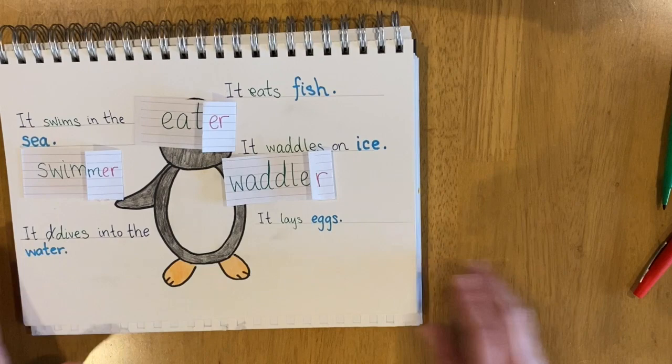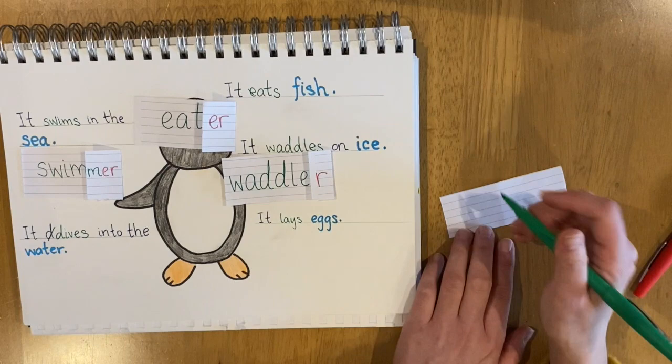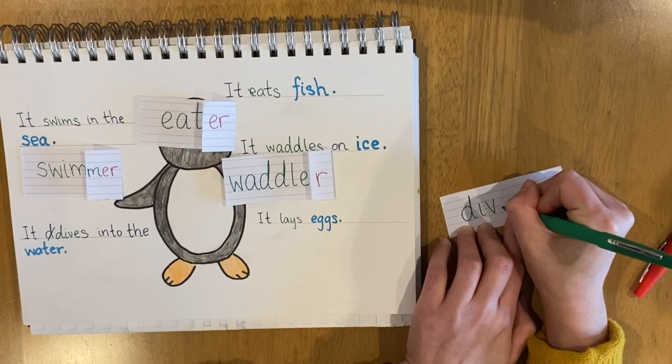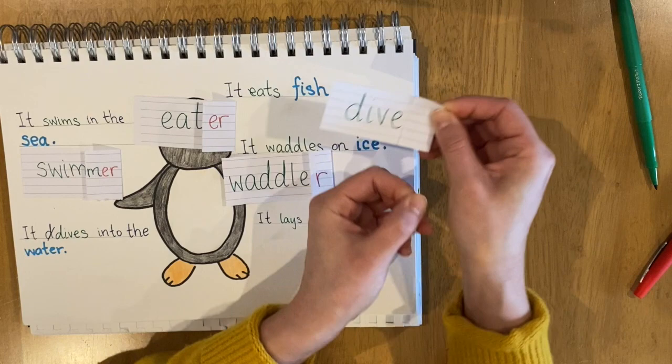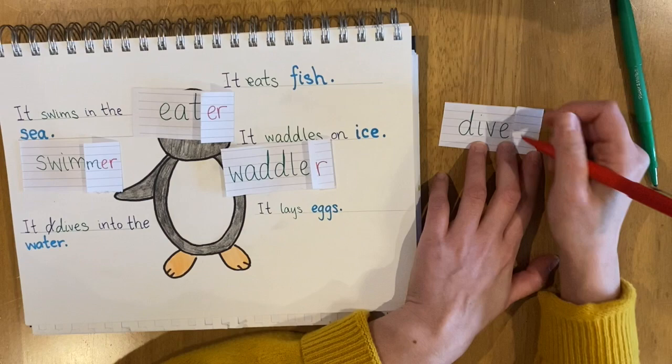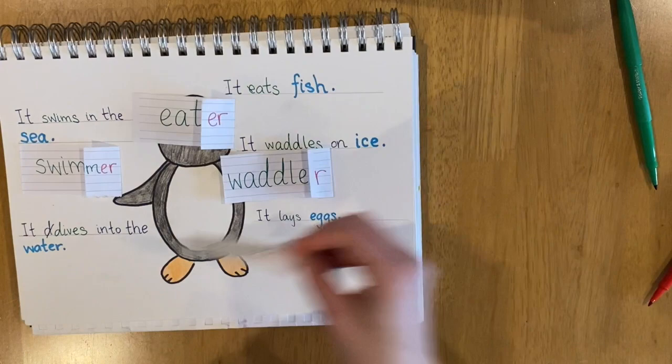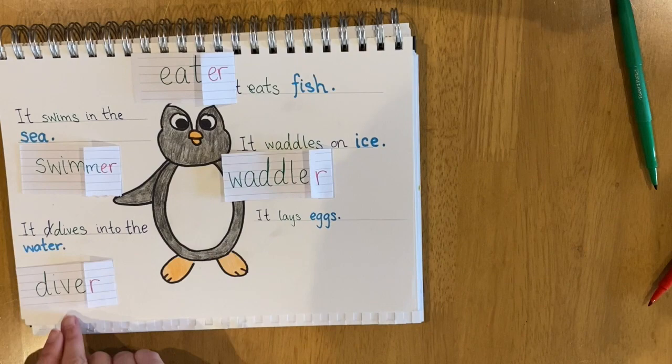What's our next one? Dives — it dives into the water, that's another verb. I'm going to write dives, then fold the piece of paper and add ER. But look, there's an E there already, so we don't need to add the E — just need to add the R. It is a diver. So our penguin is a swimmer, eater, waddler, diver.